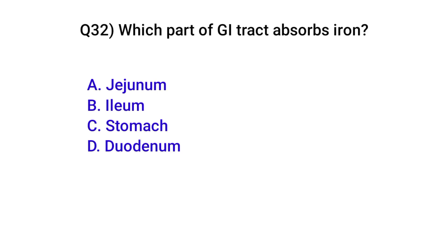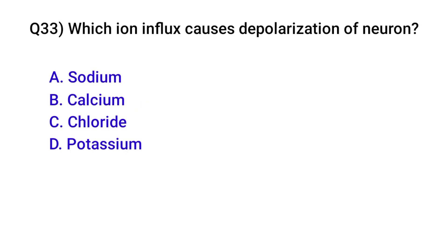Question number thirty-two: Which part of the gastrointestinal tract absorbs iron? Correct option is D: Duodenum. Question number thirty-three: Which ion influx causes depolarization of the neuron? Correct option is A: Sodium.